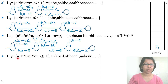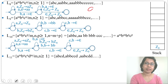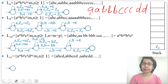The next language is a^m b^n c^n d^m, where m and n ≥ 1. The number of a's should equal the number of d's, and the number of b's should equal the number of c's. Strings accepted include abcd, then a bbcc d, and so on. For this: for a we push, for b we push, for c we pop b, and for d we pop a. Let's design the PDA for the string 2a 3b 3c 2d.